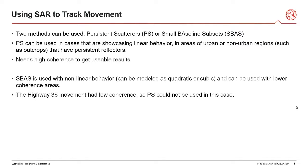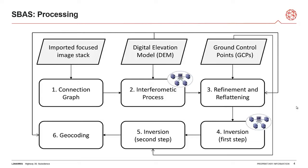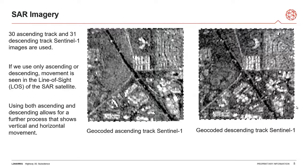The Highway 36 movement had such low coherence that PS could not be used in this case, so we'll be going over SBAS for the rest of this. The SBAS processing we use in NP-SARScape follows this chart. One important thing to call out is the amount of imagery — the first thing you need to do is import your images. When using SBAS or even PS, you want at least a year of imagery over a region, or 30 to 60 images, to build up that baseline for usable data. For this study, 30 ascending track and 31 descending track Sentinel-1 images are used.